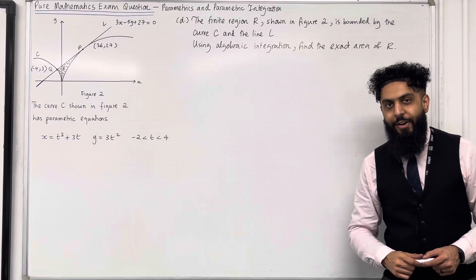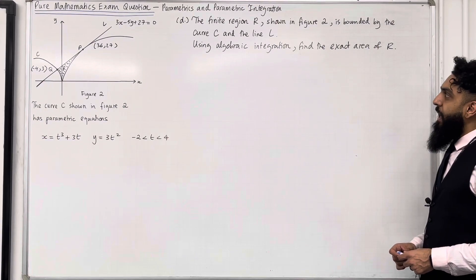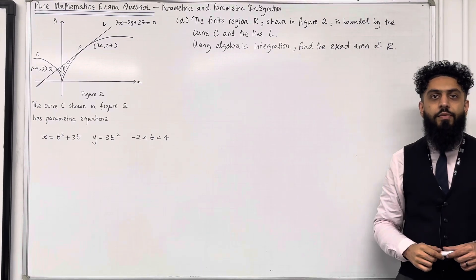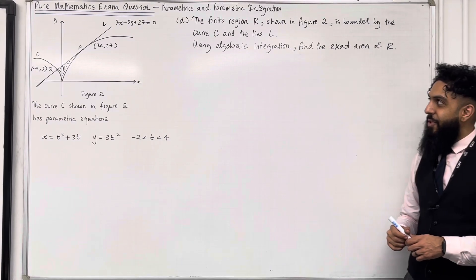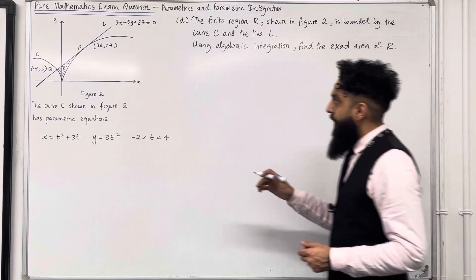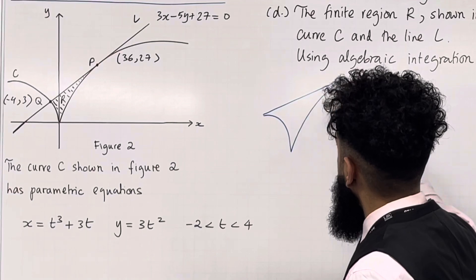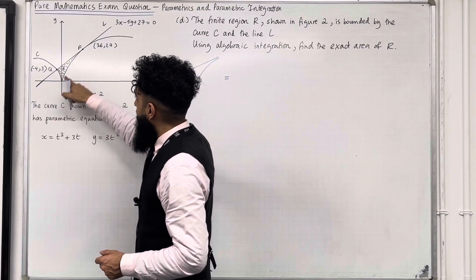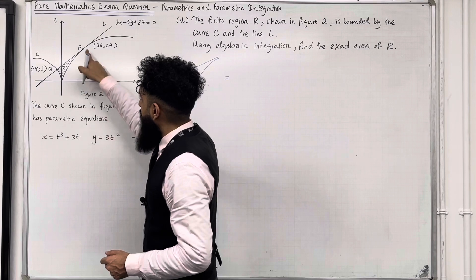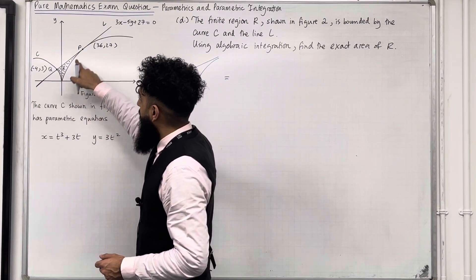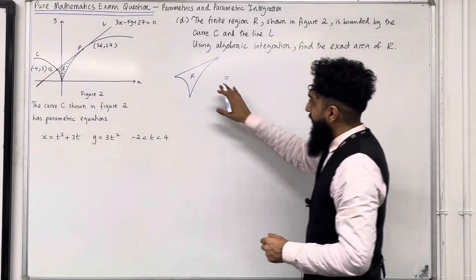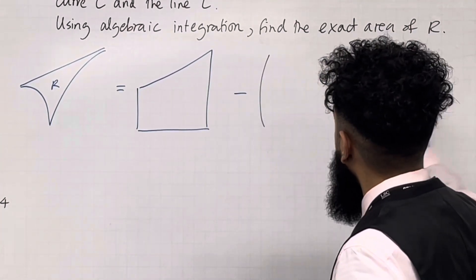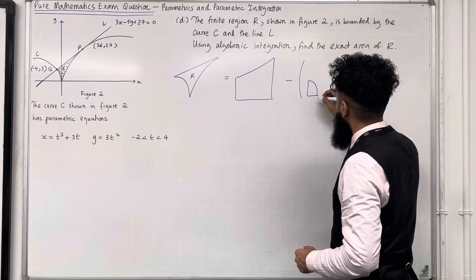Moving on to the final part, Part D. The finite region R shown in figure 2 is bounded by the curve C and the line L. Using algebraic integration, find the exact area of R. To find area R, I can work out the area of the full trapezium, then subtract the area under the curve — that is, the area of the trapezium minus the sum of the areas under the curve.